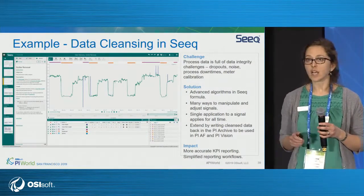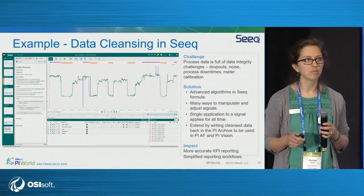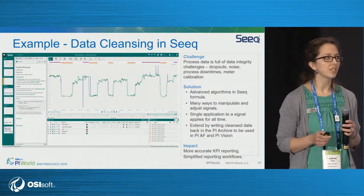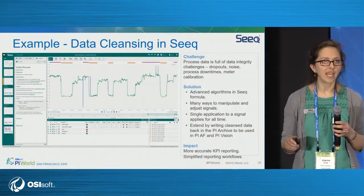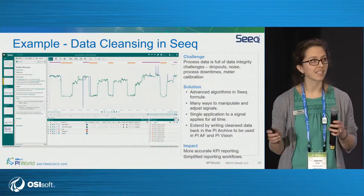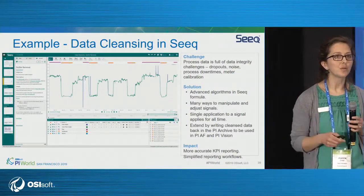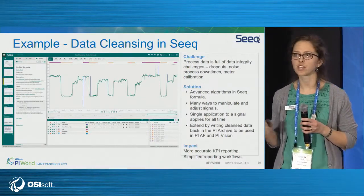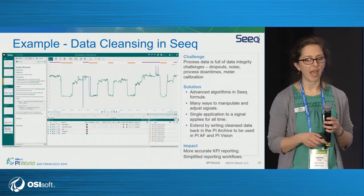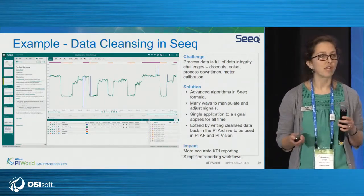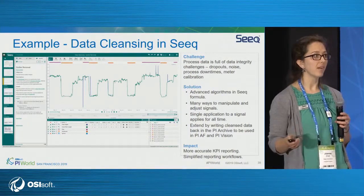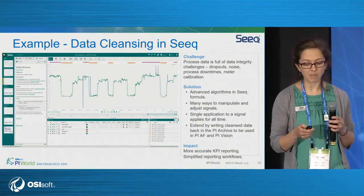We have advanced algorithms in SEEK to help you manage those kinds of things. If you want to smooth your data, filter your data, or eliminate any time your flow meter is negative because it should never be negative — these kinds of things are easily done in SEEK. Once you do it once, it's applied for all time. Just jump to the new time range and you see your calculation there. We can write this back to PI as well, creating more accurate KPI reports, simplifying our reporting workflows and data management efforts.